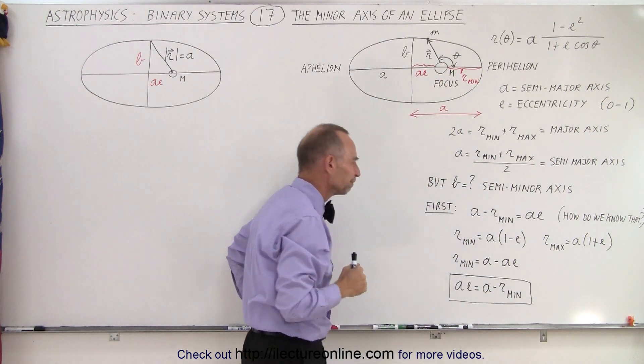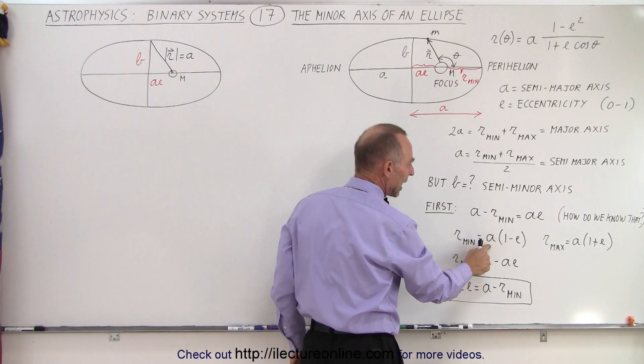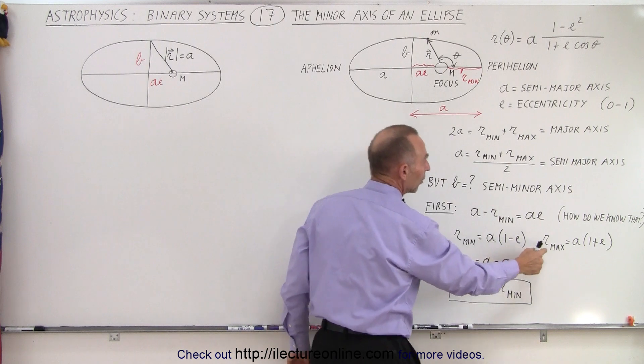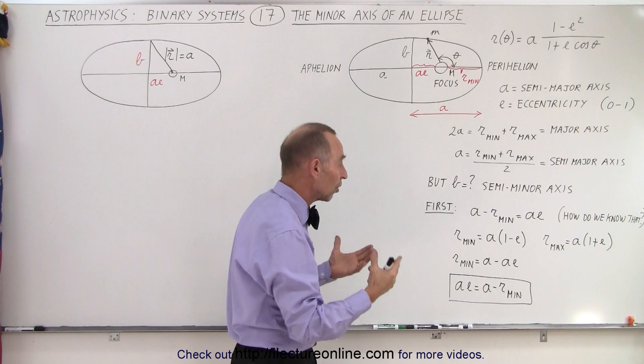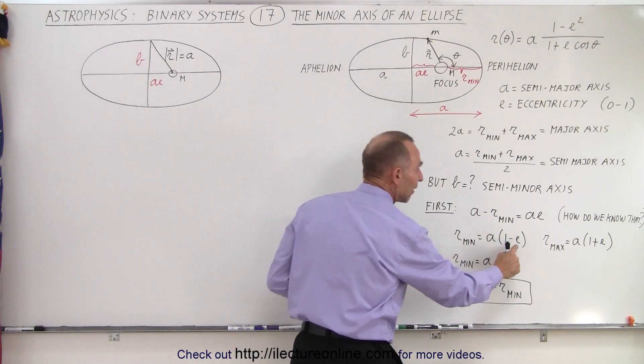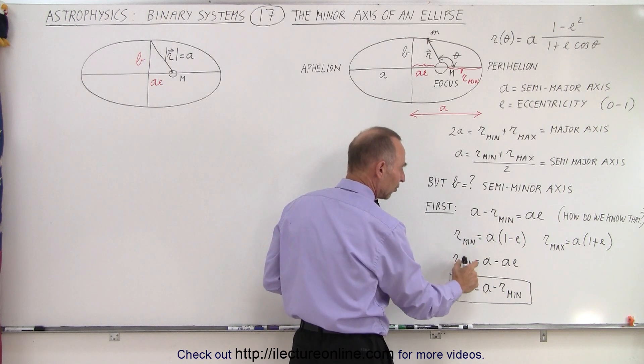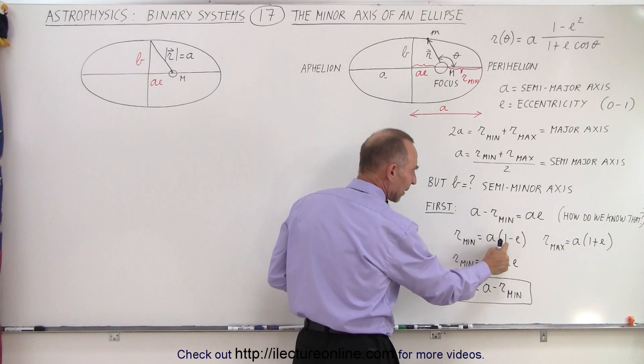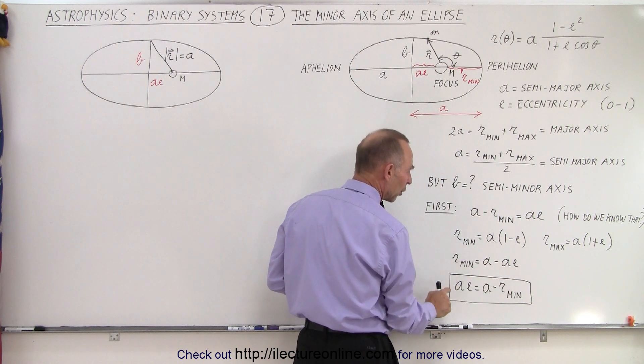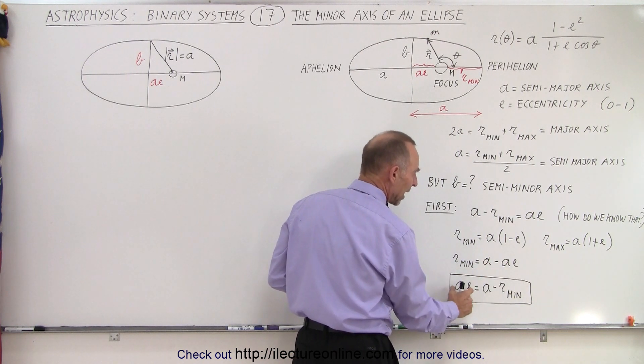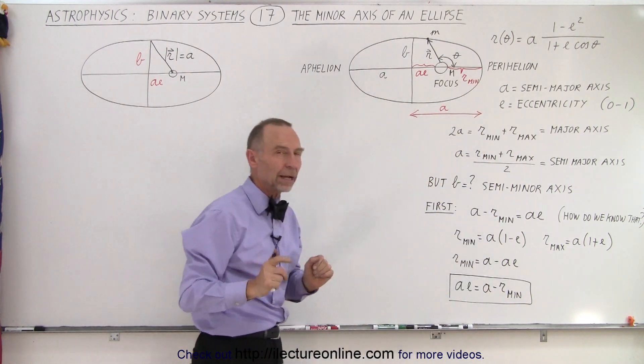How do we know that? Well, from a previous video we recognized that r_min is equal to A(1 - e) and r_max was A(1 + e). So that's how we define the radius r_min and r_max depending upon the value of the eccentricity of the orbit. And then if we solve this by multiplying A times 1 and A times e, we get A - Ae = r_min, or solving for Ae, we have Ae = A - r_min. So we can see geometrically that that is actually correct.